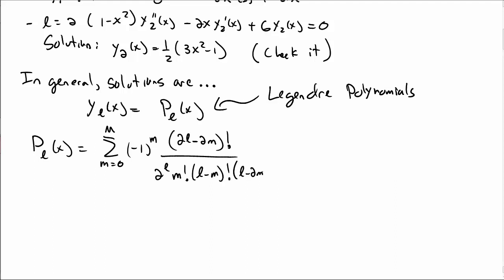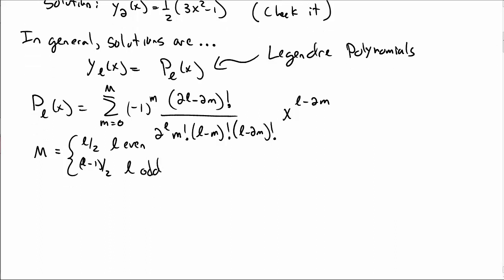over 2 to the l, m factorial, l minus m factorial, l minus 2m factorial, times x to the l minus 2m. Yikes. This big M is l over 2 if l is even, or l minus 1 over 2 if l is odd. So it's like the closest integer.